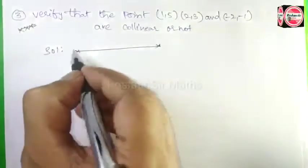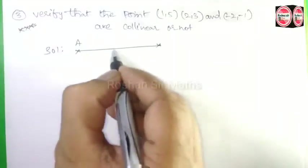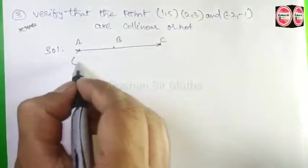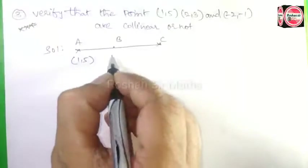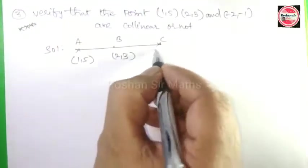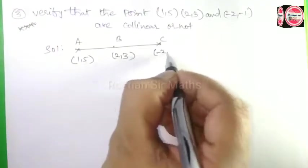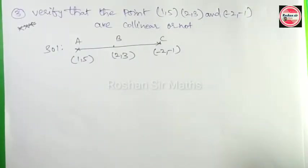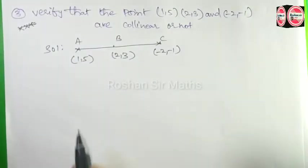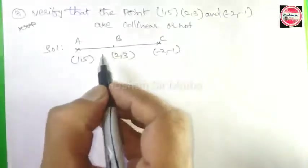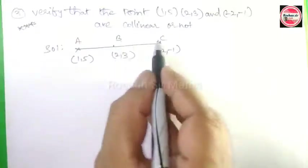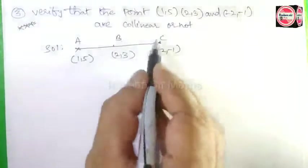For the collinear solution, the points lie on the same straight line. We take all three points: A = (1,5), B = (2,3), C = (-2,-1). After taking these three points, we need to find the distance AB, then BC, and then AC.